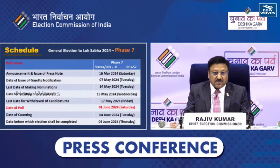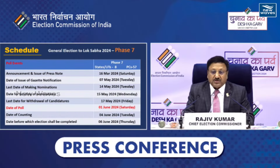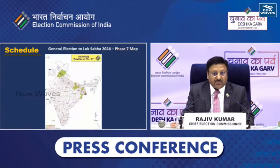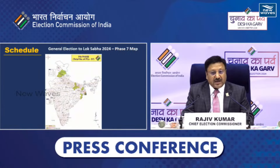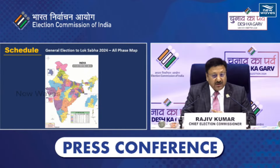Last phase — 7th phase: notification will be on 7th of May and polling on 1st of June. The last polling would be on 1st of June and counting on 4th June. Is phase mein poora Punjab, Haryana bhi shamil rahega, Bengal, Bihar, Odisha — this is how the map will look.